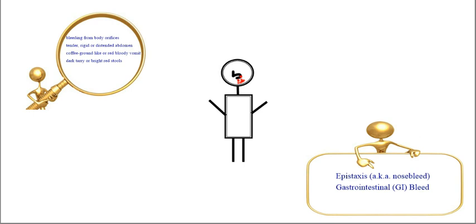nosebleed. Gastrointestinal bleed: a GI bleed may show signs such as a tender, rigid, or distended abdomen. The patient may have dark coffee ground-like or red bloody vomit and dark tarry or bright red stool. A gastrointestinal bleed is an internal bleed.